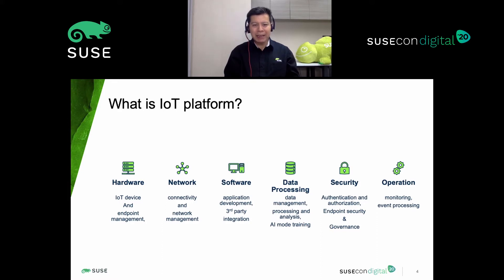Security is an important part of the IoT platform to ensure only authorized device users can operate the environment. The operational side is also critical to ensure the system is always available and resilient. Let's take a look at what the architecture looks like when all these technology stacks come together.